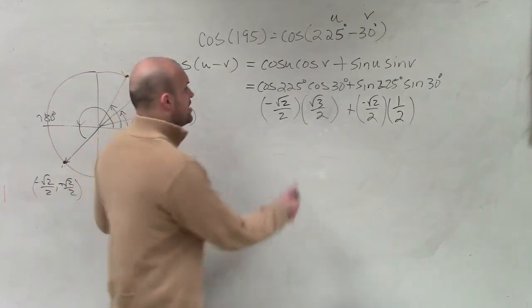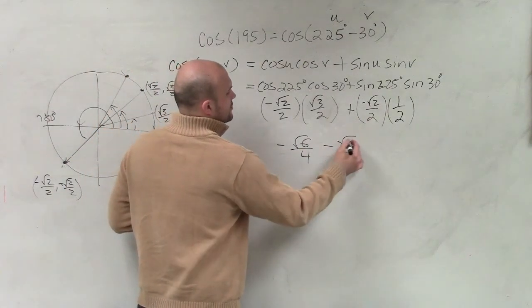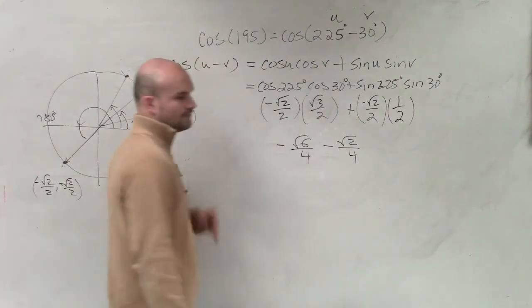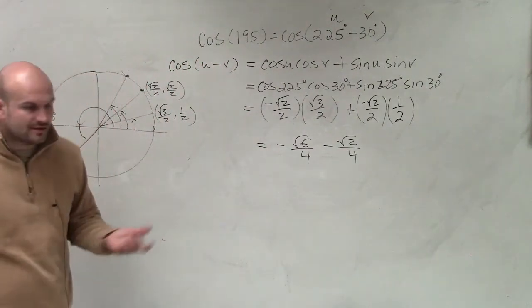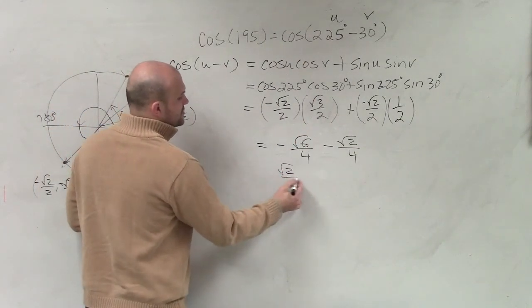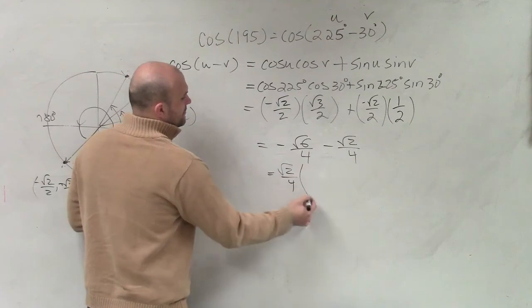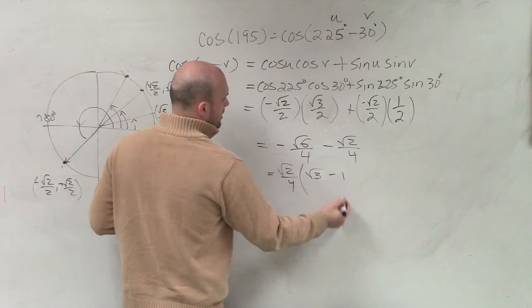So here, I multiply these across, which would be negative square root of 6 over 4 minus square root of 2 over 4. Now, you can definitely factor out a negative, if you like. Or you can factor out, or just keep it positive. I'm just going to factor out a positive square root of 2 over 4. So therefore, that's going to leave this as square root of 3 minus 1.